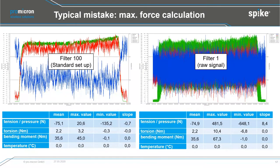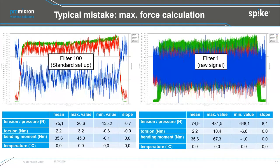Another typical mistake is when customers want to calculate the maximum force from the bending moment, torque, or feed force data. The standard filter setup in our software is filter 100, which is a moving average filter. When I calculated maximum values using filter 100, I got certain results — but when I changed to filter 1 to look at the raw signal and recalculated, the values changed dramatically: from 45 Newton meters bending moment to 67.3 Newton meters. My message: always calculate maximum forces using filter 1.